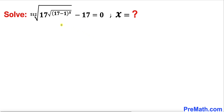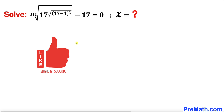Welcome to pre-math. In this video we are going to solve a given radical equation: the radical with index 512 of 17 power square root of 17, minus 1, whole power x, minus 17 equals 0.